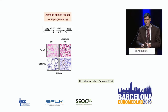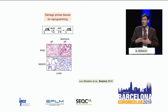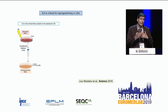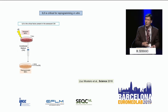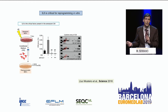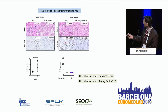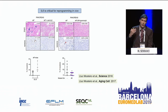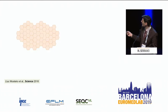The Yamanaka factors cannot reprogram by themselves — they need something from the damaged microenvironment. We have been looking for that factor, and we went to repeat these experiments in vitro. The message — and this is published — is that IL-6, interleukin-6, is a key factor for this de-differentiation and reprogramming. If we block IL-6 in vivo, we don't have reprogramming. If we inject recombinant IL-6, we have more reprogramming.